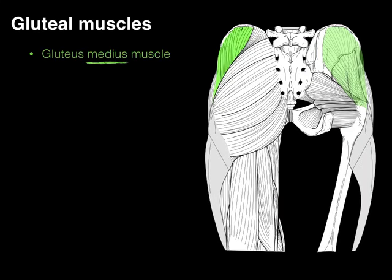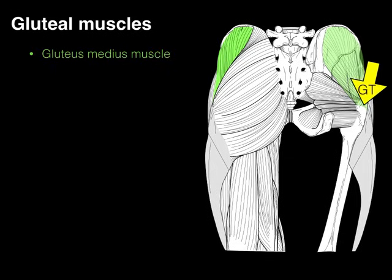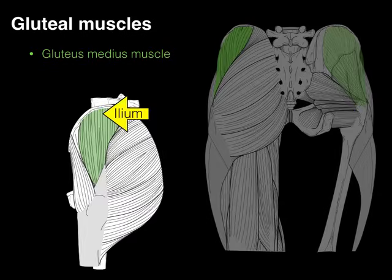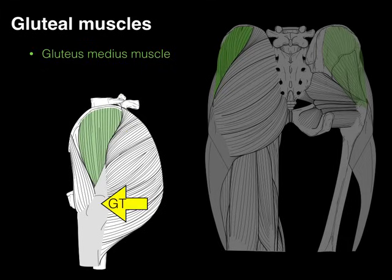Gluteus medius — it's the middle one, middle-sized one. It arises on the back of the ilium and inserts down on the greater trochanter. The greater trochanter is a very prominent bony landmark where the two gluteal muscles and all the external hip rotators attach. In a lateral view, the gluteus medius in green comes down and attaches to the greater trochanter.